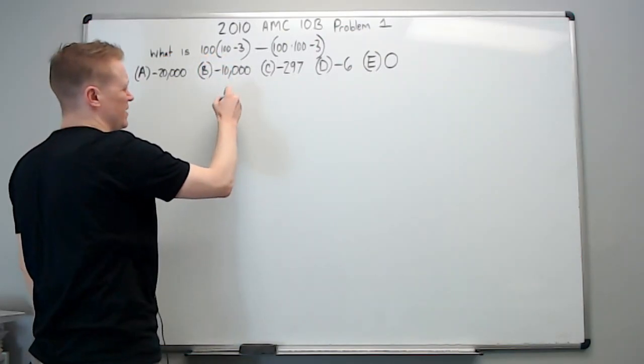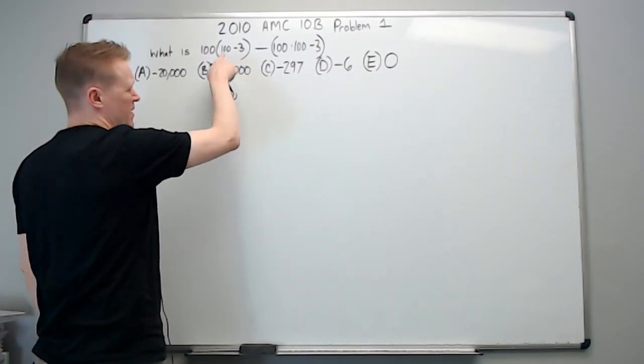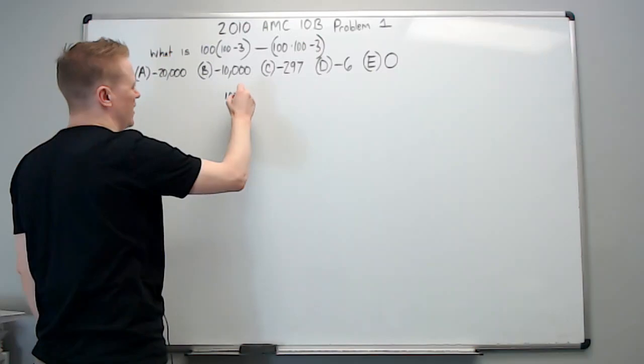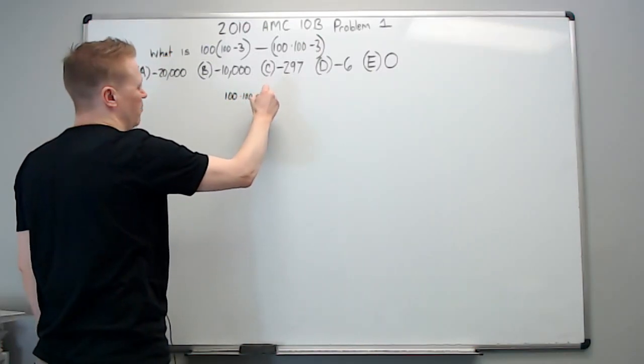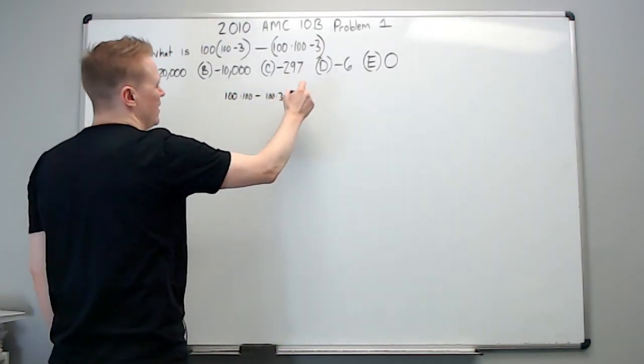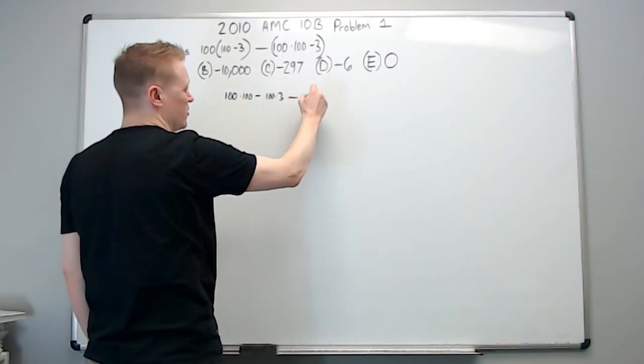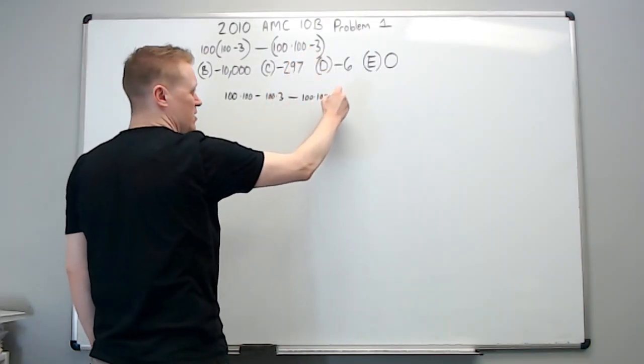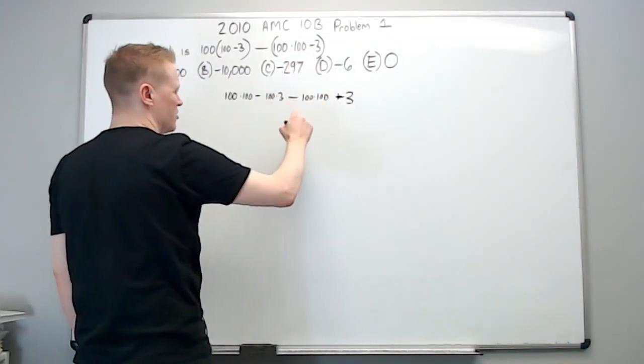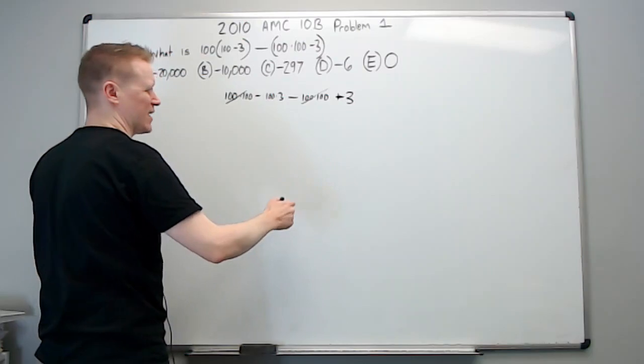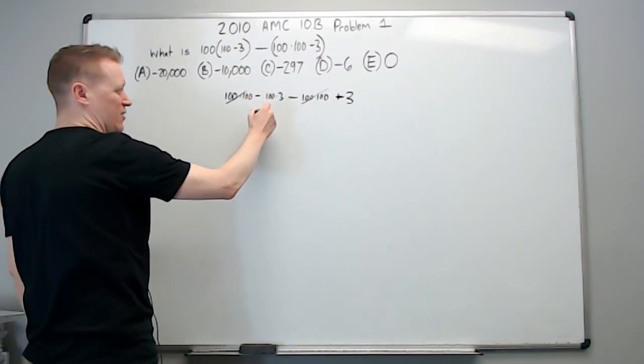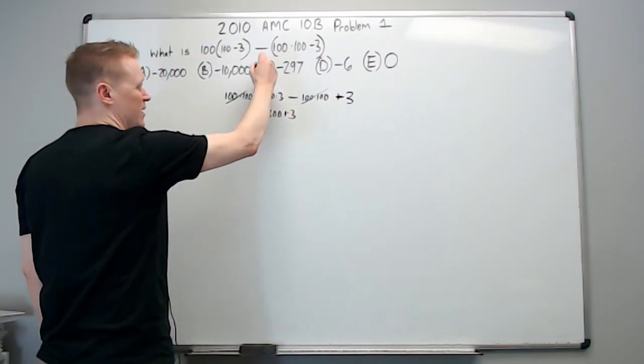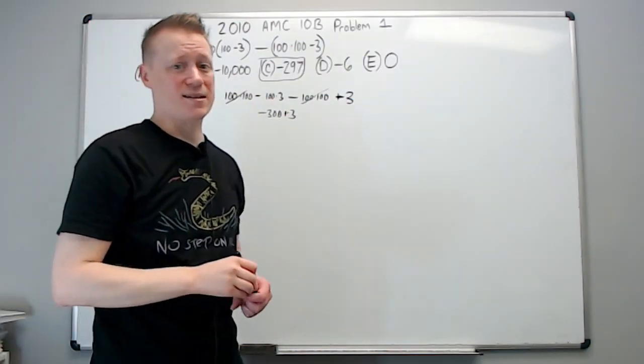Go ahead and distribute this, but I'm not going to make that 97. I'm just going to do 100 times 100 minus 100 times 3 minus 100 times 100 minus a negative 3, which is plus 3. And so what happens is the 100 times 100s cancel, and this is negative 300 plus 3, which is negative 297.